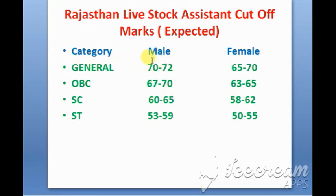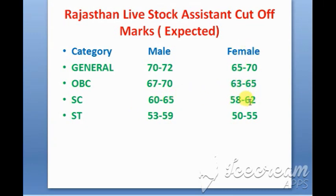For the expected cut-off, the general male candidate range is around 70% from the end. The female candidate expected range is 65 to 70. OBC male candidate expected cut-off is around 60. You can see it is roughly 50-50 if you are in the safe zone.